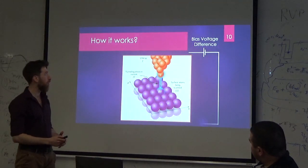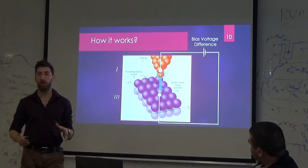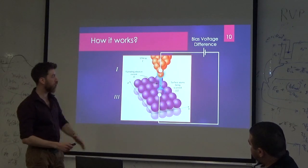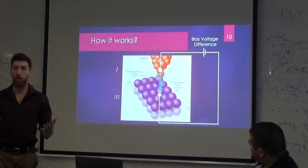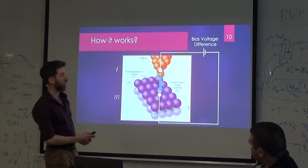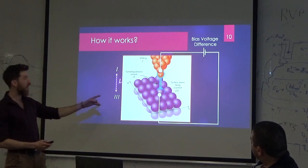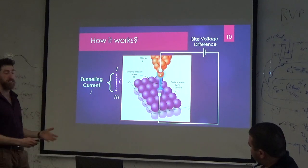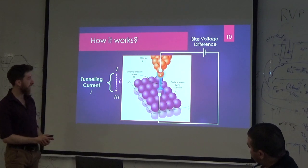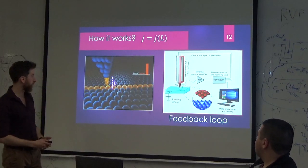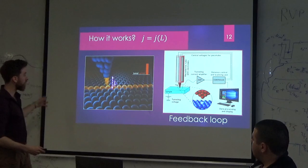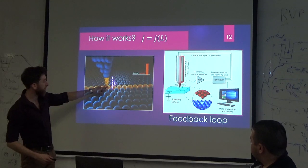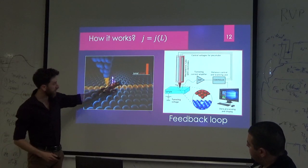So how does this device work? We have the tip — this is region 1 — the tip of the STM. And here we have region 3, which is our sample, the thing we want to measure. We connect both of them with a bias, with some voltage difference. But we still have the gap — they are not touching each other. We have the gap, we have the barrier. This barrier is where the tunneling current occurs, and it is highly dependent on the length. The tip is just supposed to scan along with the sample.